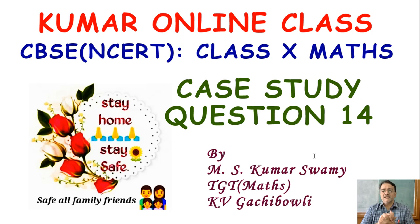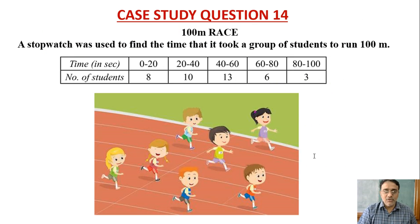Now we'll see case study question number 14, and this is also taken from sample paper. A stopwatch is used to find time that it took a group of students to run 100 meter. This table has been formed as a grouped frequency distribution and based on this table some questions are there. Now those questions we have to do.